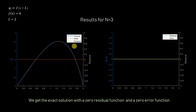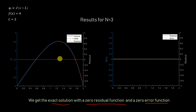For n equals 3 we get the exact solution with zero residual function and zero error function. This is because when n equals 3 our basis function reaches x^4 — matching the maximum power of the actual solution — so we achieve the exact solution, as expected.